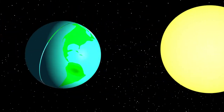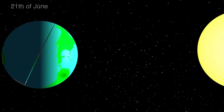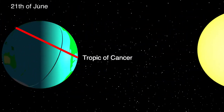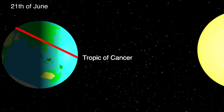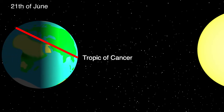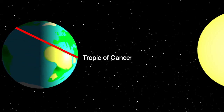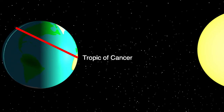In the northern hemisphere, this is called the winter solstice. Half a year later, on the 21st of June, the sun gives the most energy to the Tropic of Cancer, a latitude circle 23.5 degrees north of the equator, causing the summer solstice in the northern hemisphere.